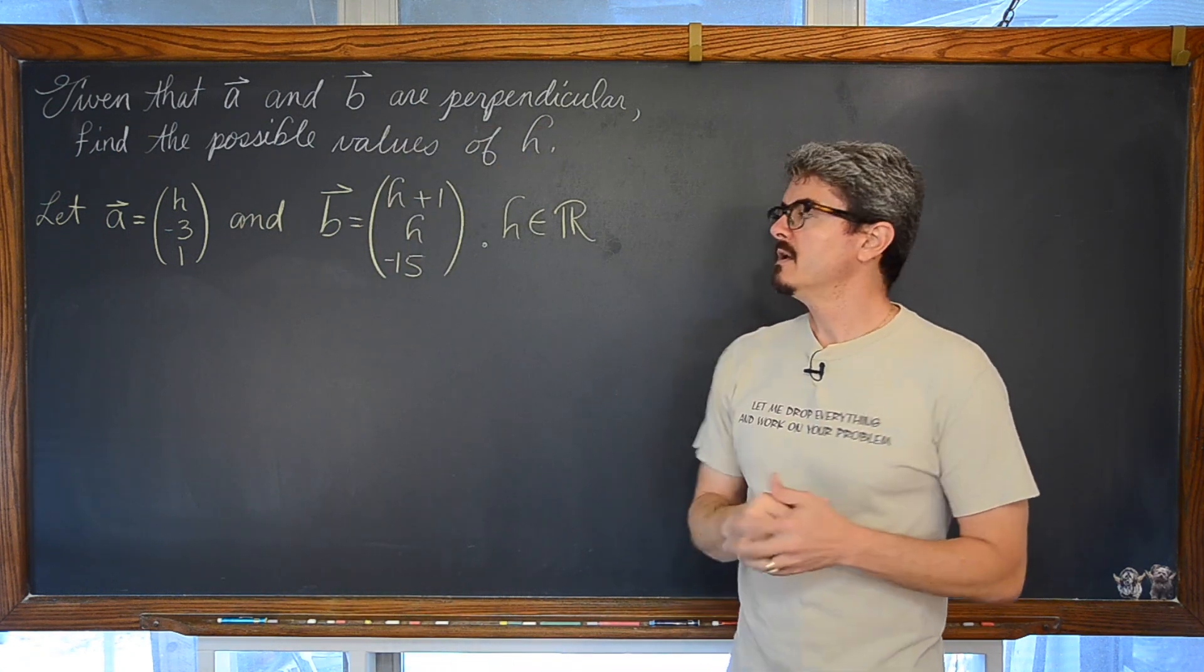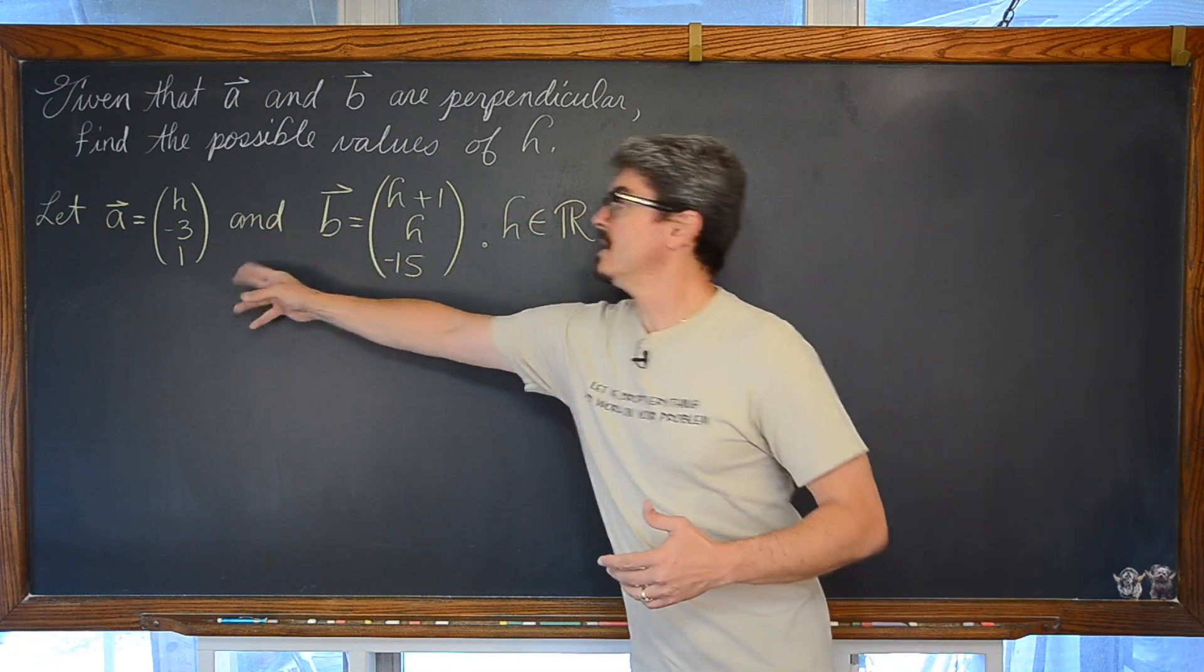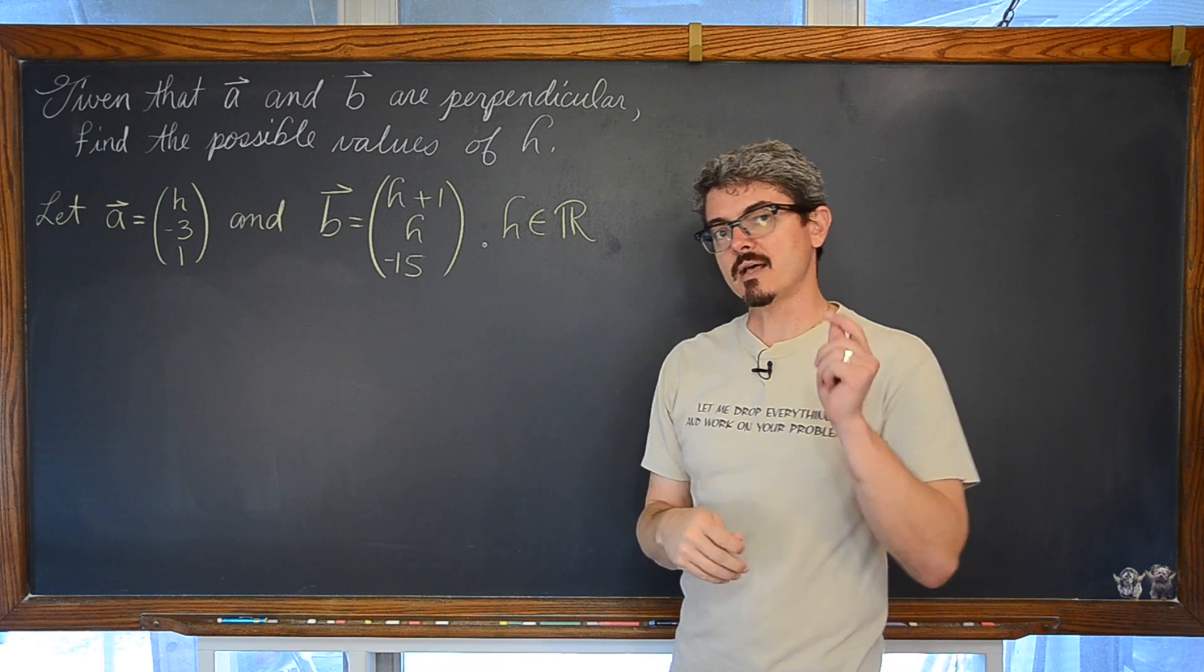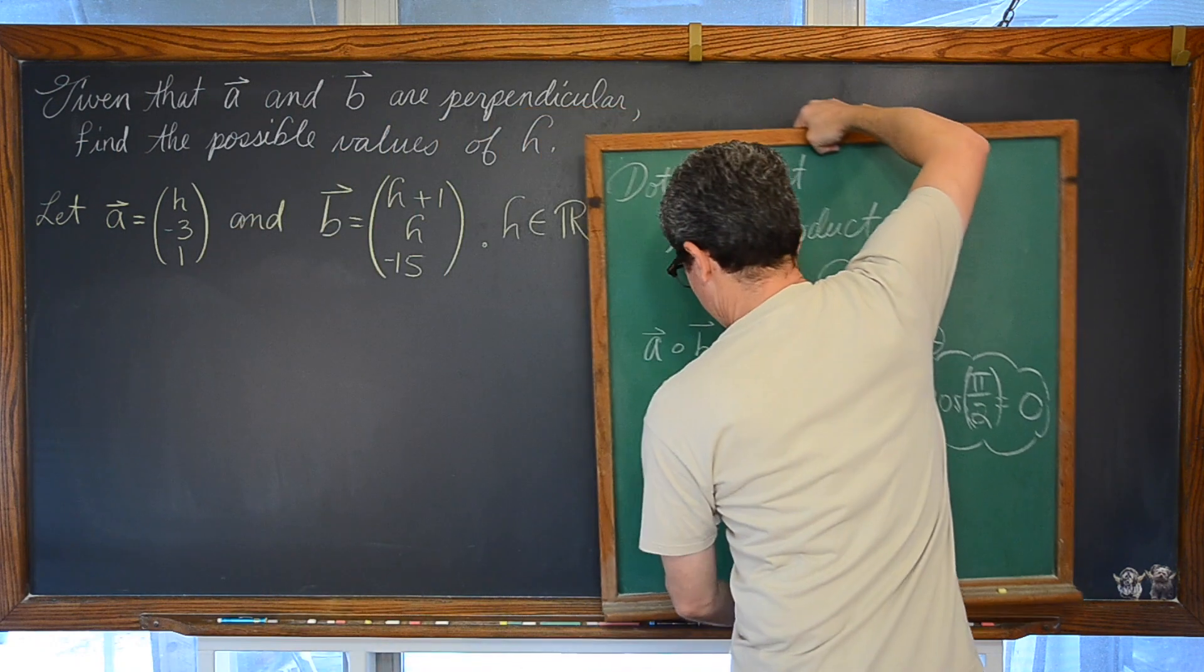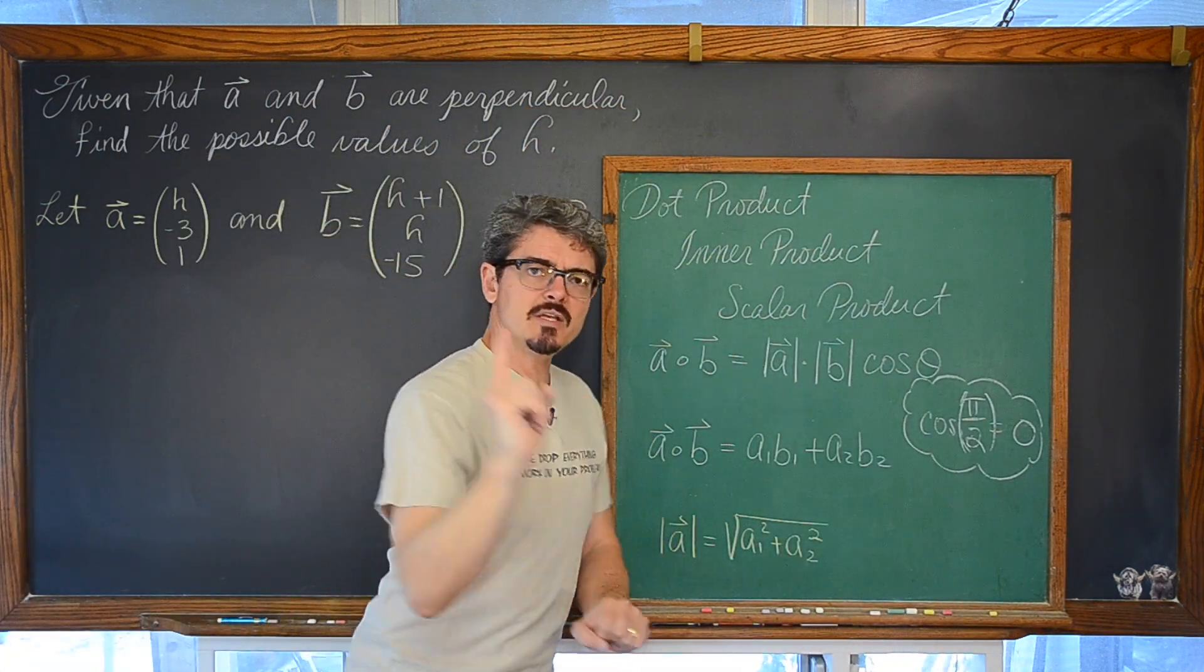We are going to have to recall a fact that there is something special about vectors which are perpendicular and orthogonal when you are analyzing them together. It is that their dot product, that the dot product, inner product, or the scalar product is equal to zero.